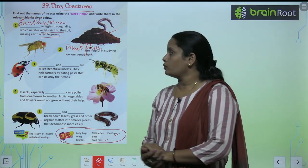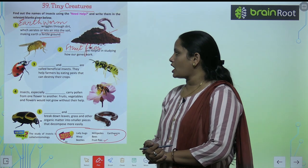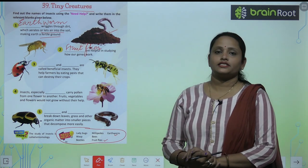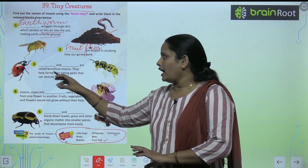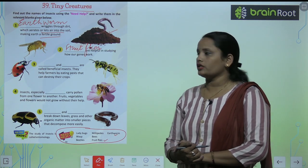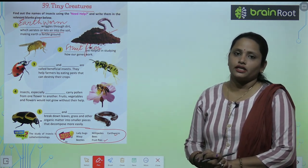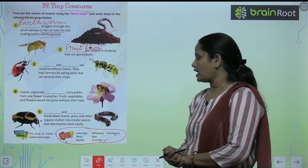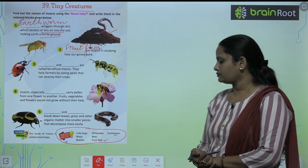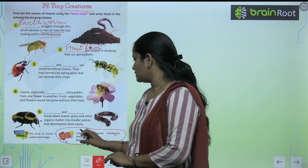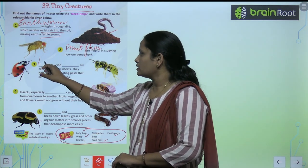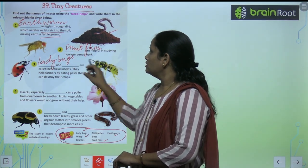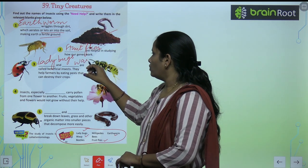Now children, let's move on to the third question. Dash and dash are called beneficial insects. In insects ko bohot zyada beneficial insects kaha jata hai. They help farmers by eating pests that can destroy their crops. Yeh pests ko kha jata hai jo farmers ki crop ko destroy kar sakti hai. So these are ladybugs and wasps. Ladybugs and wasps — and this is a wasp.